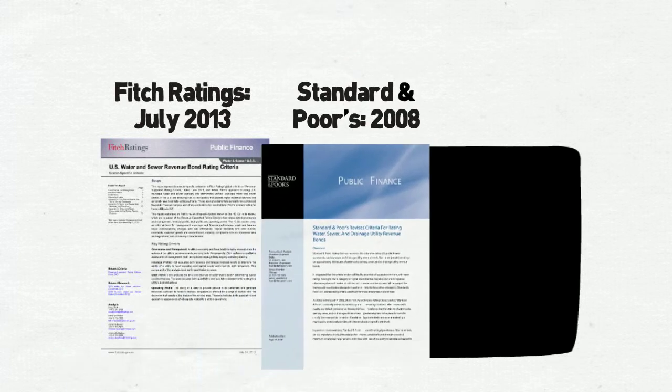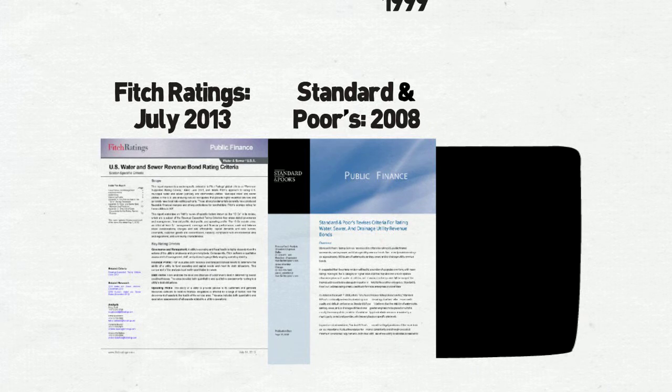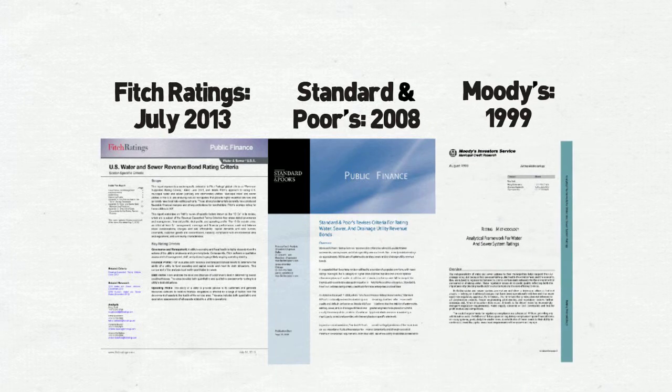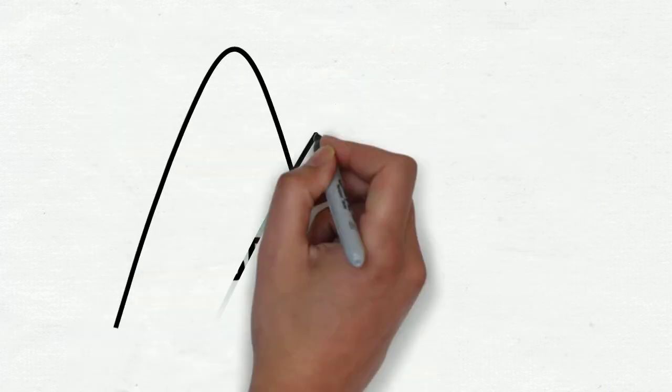The credit rating agency definition of a financially resilient utility is no mystery black box. Each one periodically publishes their rating criteria for all to see. As of the production date of this video, the most recent criteria from Fitch Ratings was published in its U.S. Water and Sewer Revenue Bond Criteria in July of 2013. The most recent criteria from Standard & Poor's was published in 2008. And Moody's Research and Ratings is still working off of a 1999 analytical framework, although they are in the process of updating their criteria report.